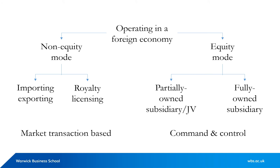A firm can operate in a foreign market in two ways. First, through contractual agreements — that is, by finding a partner who distributes its products in that foreign market, as in case of exports, or supplies inputs from that foreign market, as in case of imports, or performs value-creating activities in the foreign market using the firm's intellectual property and paying royalties. For example, many smartphone manufacturers in East Asia use Qualcomm semiconductor and wireless communications technology patents and pay Qualcomm royalty.